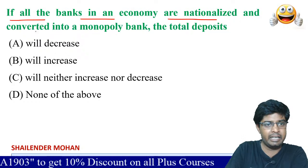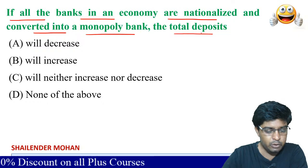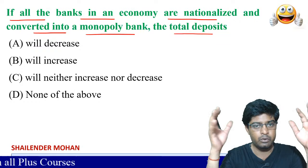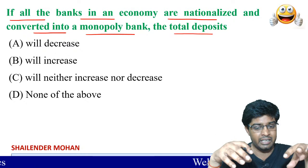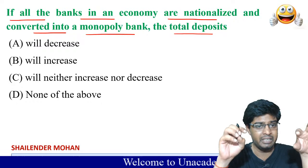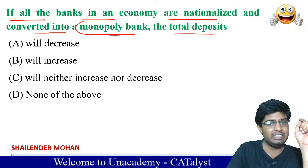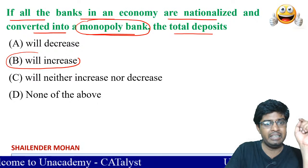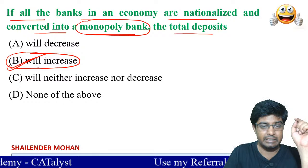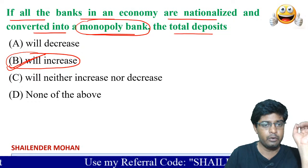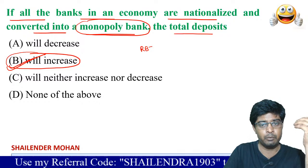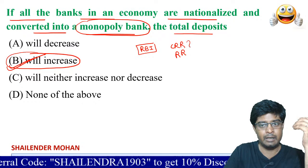If all banks in an economy are nationalized and converted into a monopoly bank, what will be the total deposit? When there is a monopoly of a bank or any entity in the economic sector, its deposit will simply increase. RBI defines the repo rate, CRR (cash reserve ratio), and SLR (statutory liquidity ratio), and all banking functions run from there.